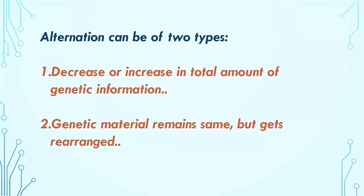The other type is where the genetic material remains the same but gets rearranged within the chromosome and persists in the offspring generation. Based on decrease, increase, or rearrangement of chromosomal material, there can be four types of variations.